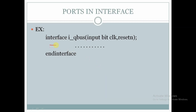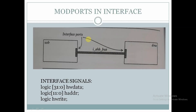For example: interface i_qbus, input bit clock and reset_in. These two signals need to be passed through all the interfaces, so clock and reset can be declared as ports of the interface. These are the interface signals used in this example.